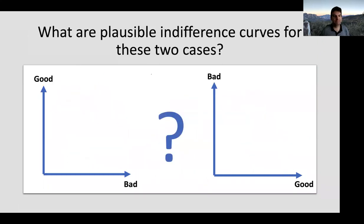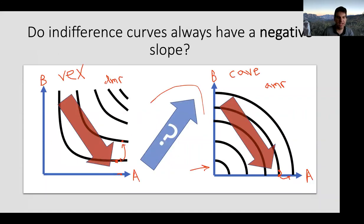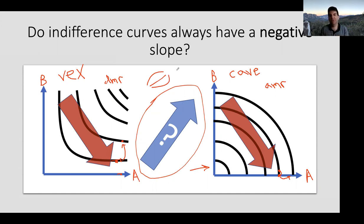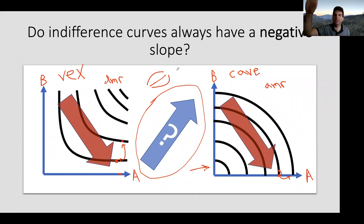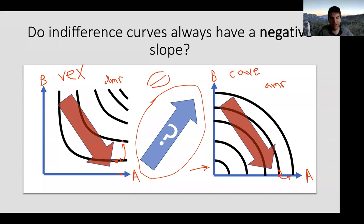So the question is: when would utility functions look accelerating—when would we see this shape? Can we think of a time where indifference curves would be accelerating? I'll put you into breakout rooms to discuss either what an accelerating indifference curve means, or what an upward sloping indifference curve means, or when we might see an accelerating indifference curve.